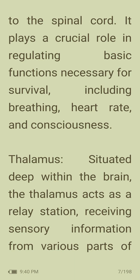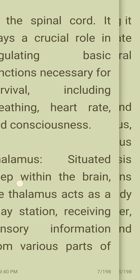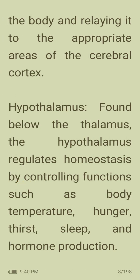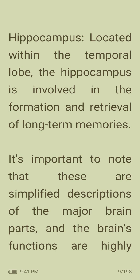Thalamus: situated deep within the brain, the thalamus acts as a relay station, receiving sensory information from various parts of the body and relaying it to the appropriate areas of the cerebral cortex. Hypothalamus: found below the thalamus, the hypothalamus regulates homeostasis by controlling functions such as body temperature, hunger, thirst, sleep, and hormone regulation.